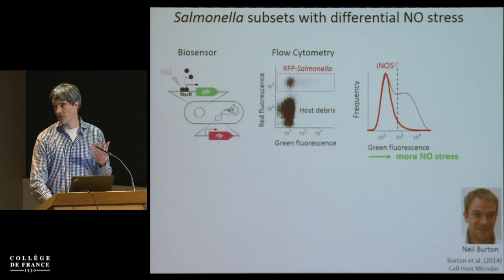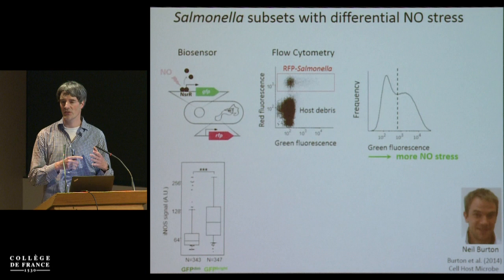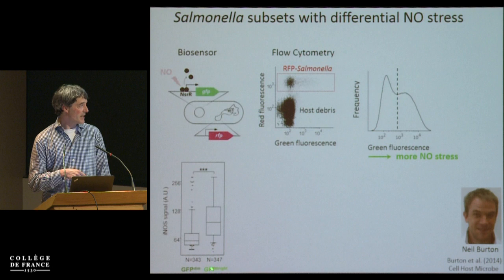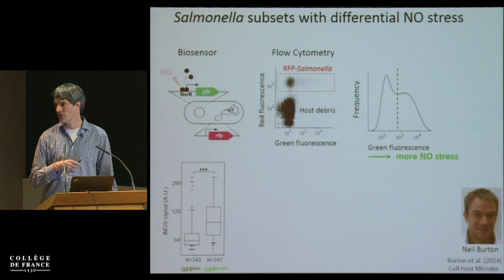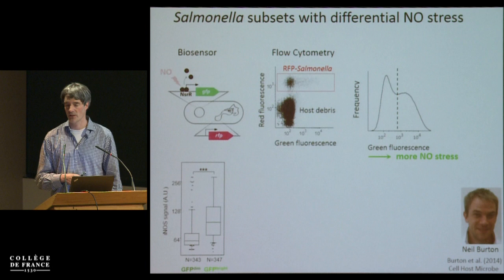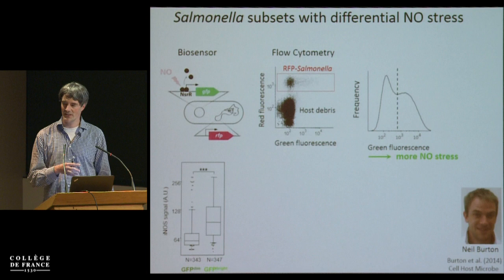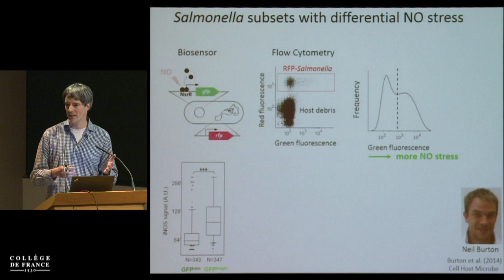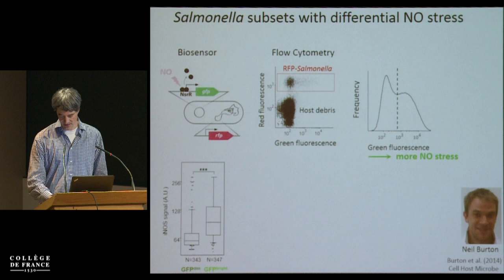We believe this is a strong indication that these bright bacteria are induced by host NO. We can then look in sections to see where these bright bacteria are, and correlate this with iNOS levels in the same region. Indeed, the GFP-bright bacteria are mostly in regions that also have a high iNOS antibody signal. So there is regional high production of NO, and bacteria seem to respond to this locally produced NO.